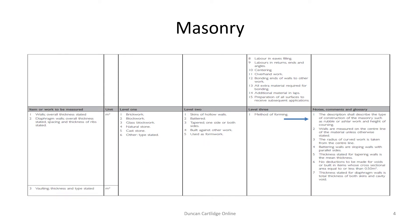The detail required at Level 3 refers to the items on the previous slide, namely the type of brick, the bond, etc. The notes, comments and glossary leave it up to the taker-off to describe the item of masonry in such a way that the contractor or subcontractor will be able to price it.